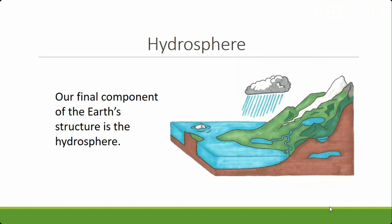Our final component for this week is going to be the hydrosphere. By looking at the word hydrosphere, hydro represents water. So here we're going to see the different types of water forms that are found on the earth structure and how they're connected to living things. They're also connected to the different components, so we're going to end the week with the hydrosphere and then connect all of these components together to see how all four of them give us the earth structure.